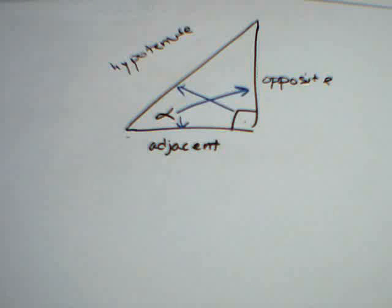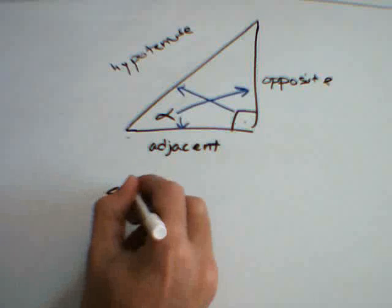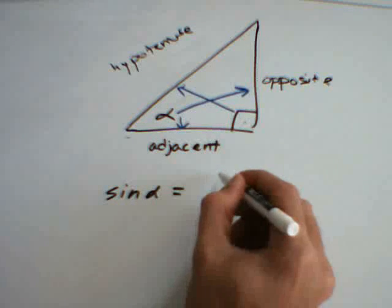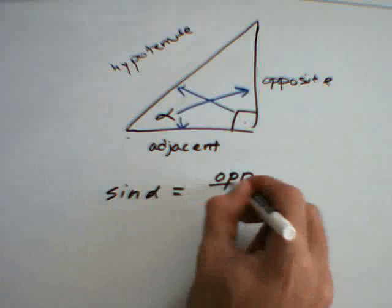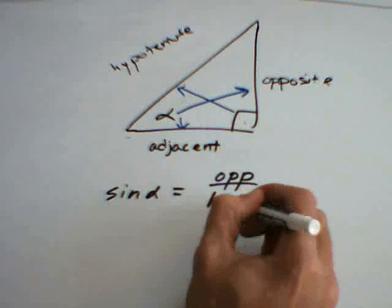Now, in trigonometry, we define three basic ratios. The sine ratio, the sine of this angle, is equal to the length of its opposite side divided by the length of the hypotenuse.